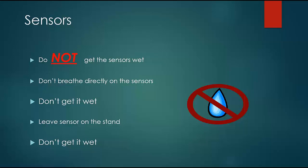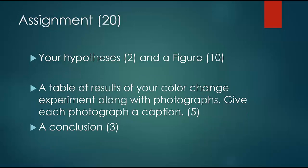Your instructor may modify this assignment a little bit, but this is generally what the assignment will be: you're going to turn in a lab summary which will include your hypotheses as well as a figure. It should also include a table of results of your color change experiment, and you can attach photographs at the end of this summary to back up what you claim in your writing.